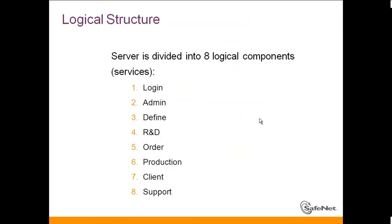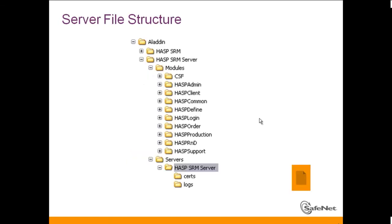Talking about the Business Studio server, it has eight different components within it. These components handle login, admin, define, R&D, order, and so on — all divided into different components. We can see them by going to the directory where Business Studio resides and viewing the different paths for each one.